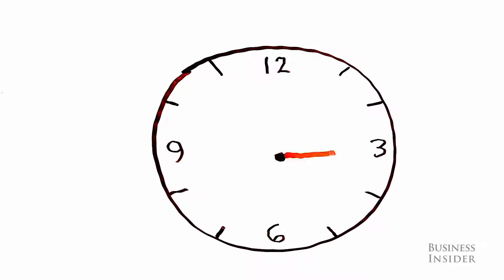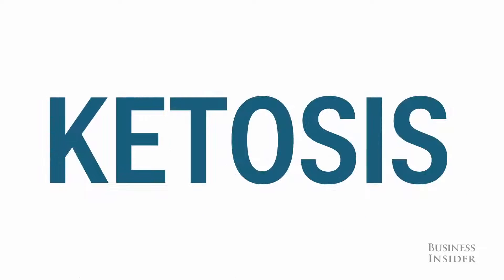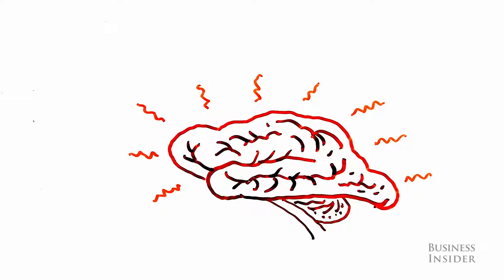The body enters a state of ketosis. Without glycogen stores, it looks to fat cells for energy. But your brain can't use that energy and it starts to starve.